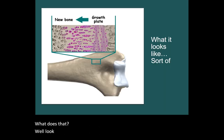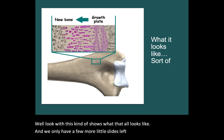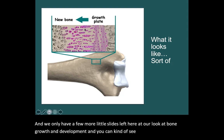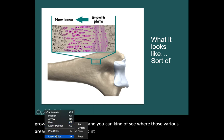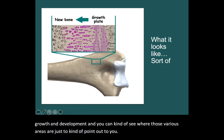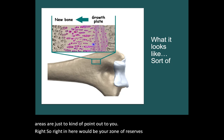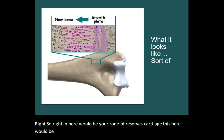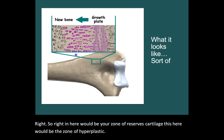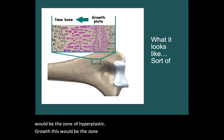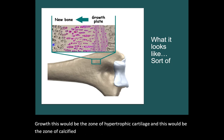This slide shows what that all looks like. We have a few more slides in our look at bone growth and development. Right here would be your zone of reserve cartilage, then the zone of hyperplastic growth, then the zone of hypertrophic cartilage, and finally the zone of calcified matrix — all visible right here on this slide.